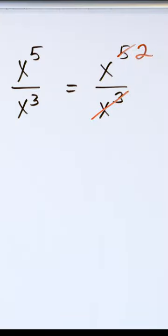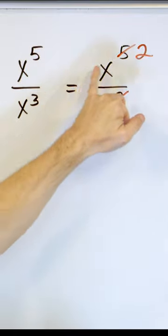I keep telling you, you can subtract the exponents, but that's all you're doing when you cancel because you're saying three of them are gone. And so five minus three is two.